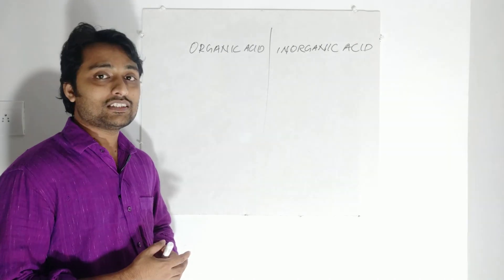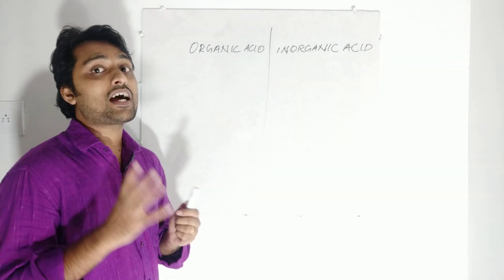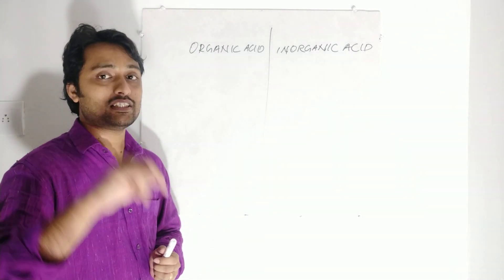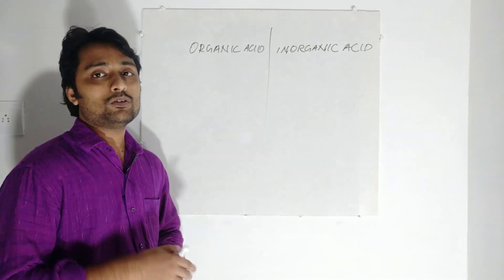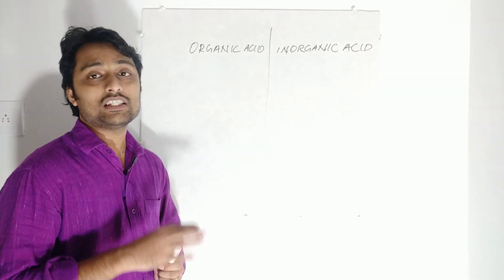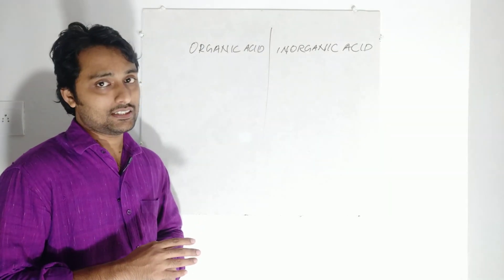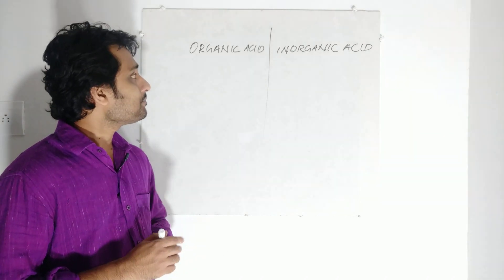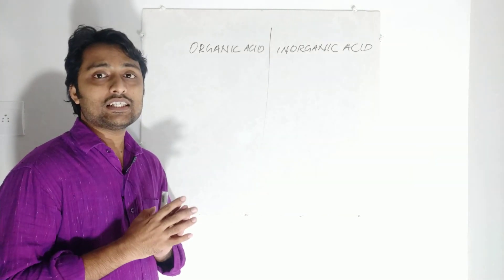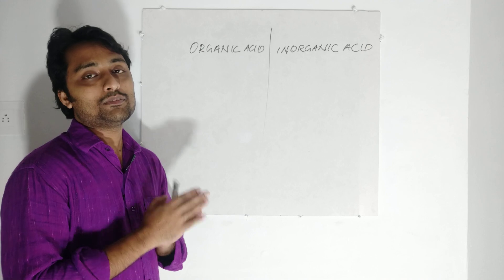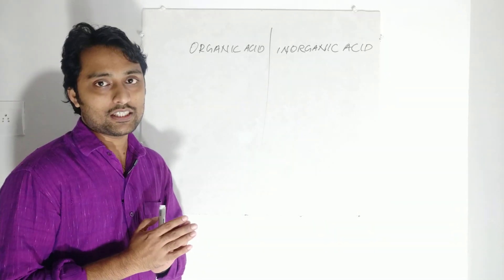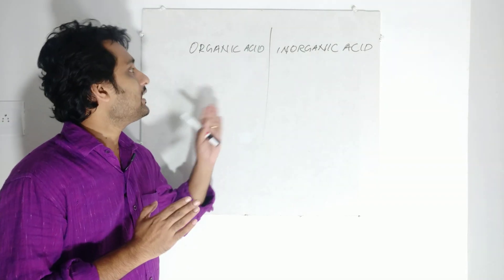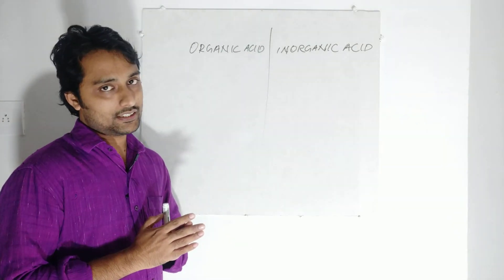In other words, we can say that organic acid is the acid which contains carbon. The common factor is carbon. All acids which contain carbon are known as organic acids, because we know that life exists because of carbon compounds. So if there is life, there will be carbon, and carbon-containing acids are known as organic acids.